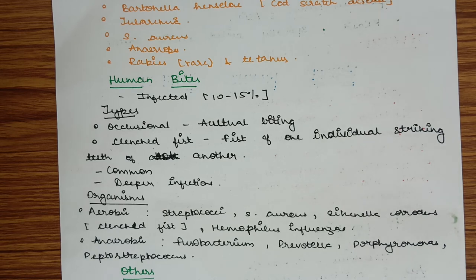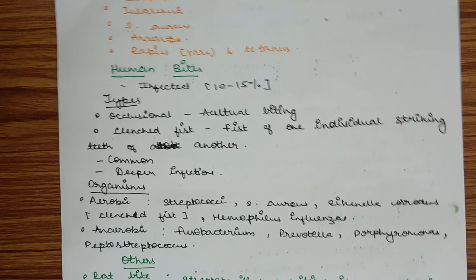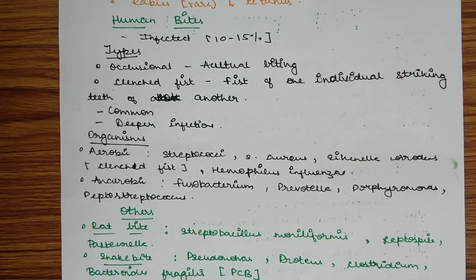Organisms in human bites: aerobic—Streptococci, Staphylococcus aureus, Eikenella corrodens (more common in clenched fist bites), Haemophilus influenzae. Anaerobic—Fusobacterium, Prevotella, Porphyromonas, and Peptostreptococcus.